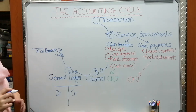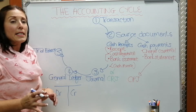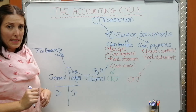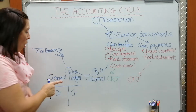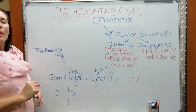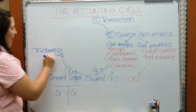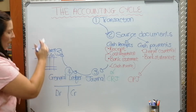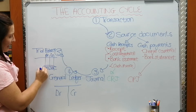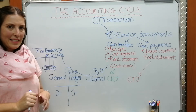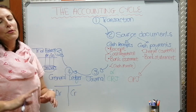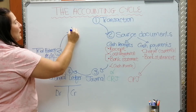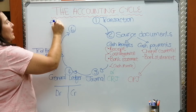The double entry principle states that for every debit in the books of our business there needs to be the same credit somewhere. In the trial balance we check whether all debit amounts equal all credit amounts from the General Ledger. The trial balance has a debit and a credit column, and the totals at the end must balance — then we know the double entry principle has been applied correctly. This is step five.